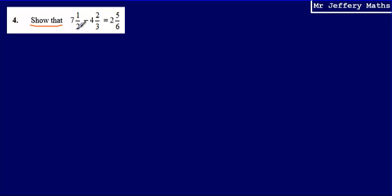The way that I'm going to do that is I'm going to multiply the denominator by the whole number and then add on the numerator. That will give me—so 2 multiplied by 7 is 14, add on the 1 gives me 15 halves.